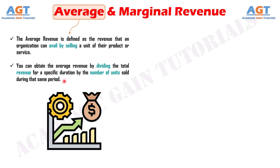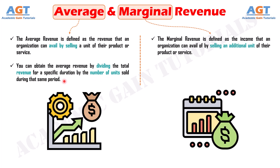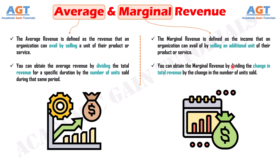On the other hand, the marginal revenue is defined as the income that an organization can avail of by selling an additional unit of their product or service. You can obtain the marginal revenue by dividing the change in total revenue by the change in the number of units sold.